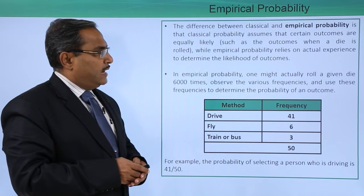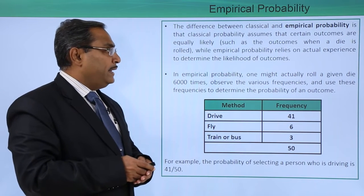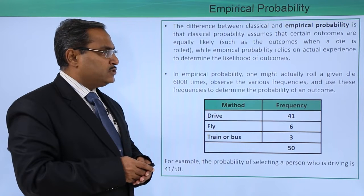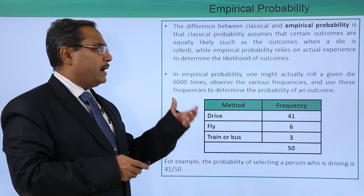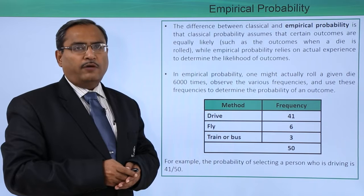Such as the outcomes when a die is rolled, while empirical probability relies on actual experience to determine the likelihood of outcomes.